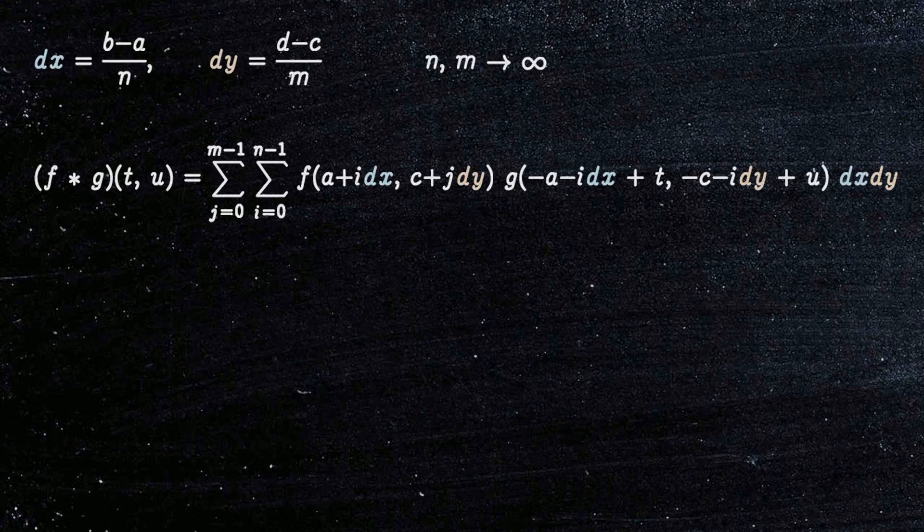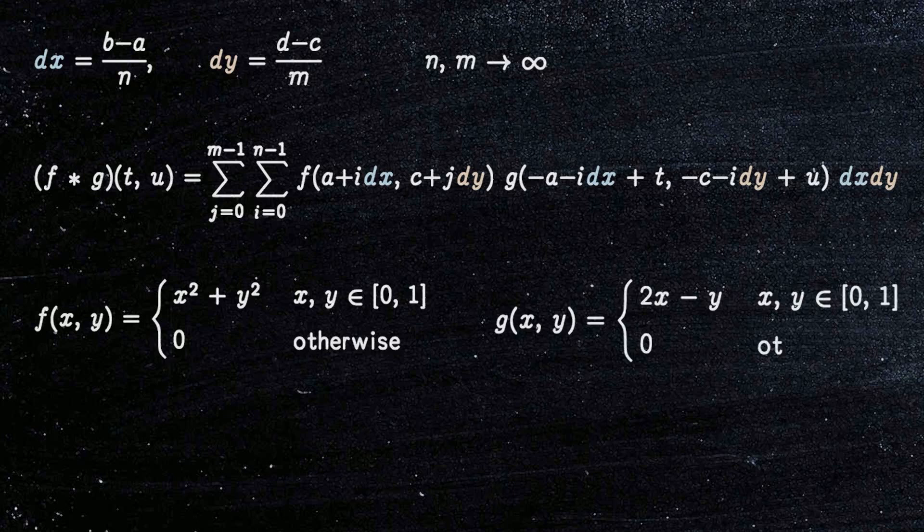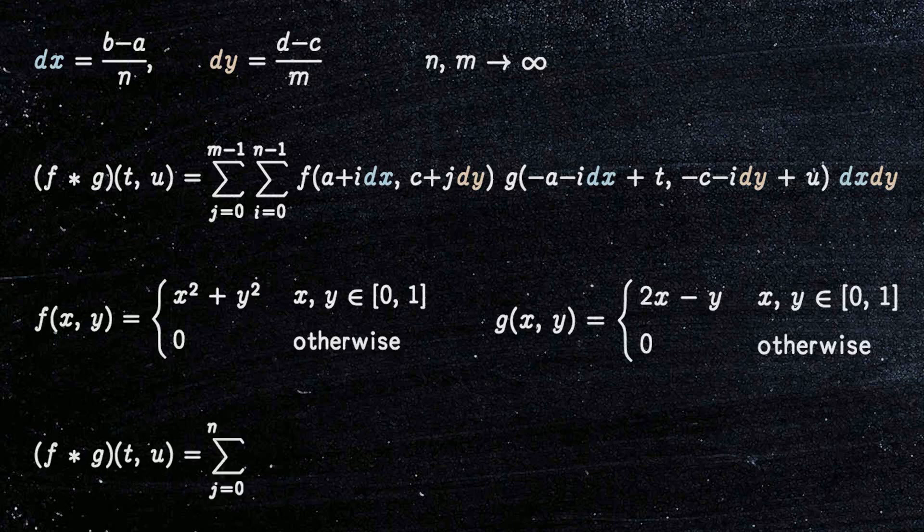For example, suppose we have this function and this other function. The convolution of these two functions is defined in this way.